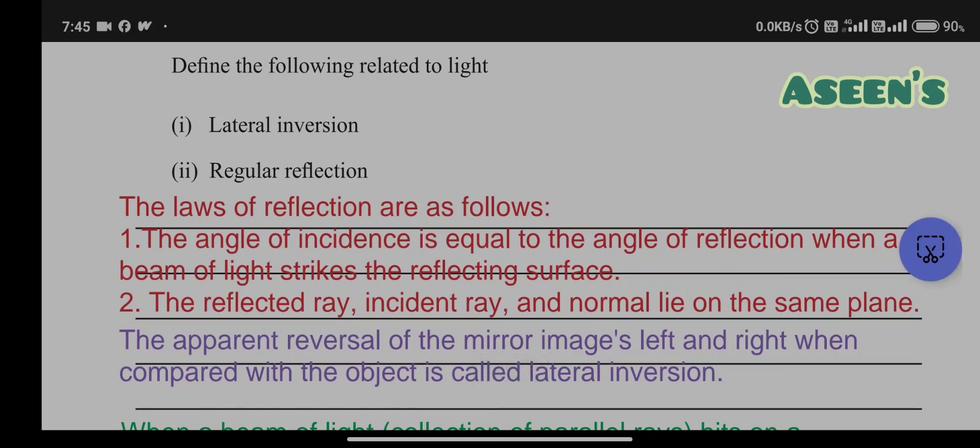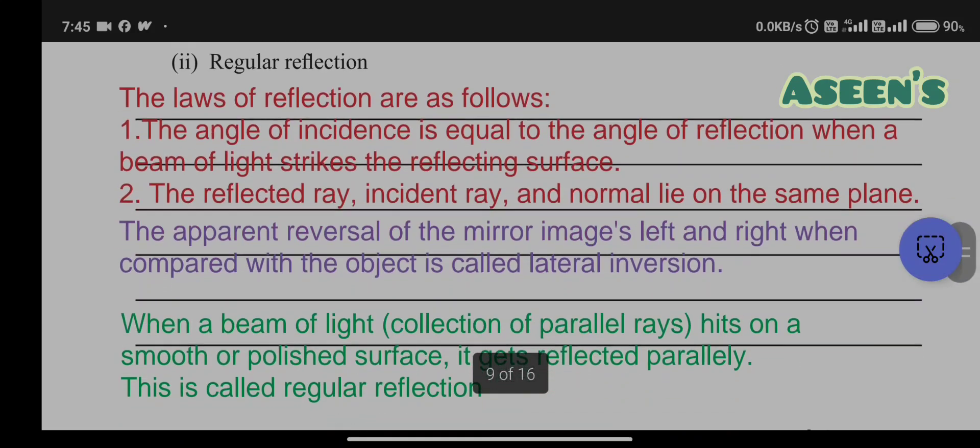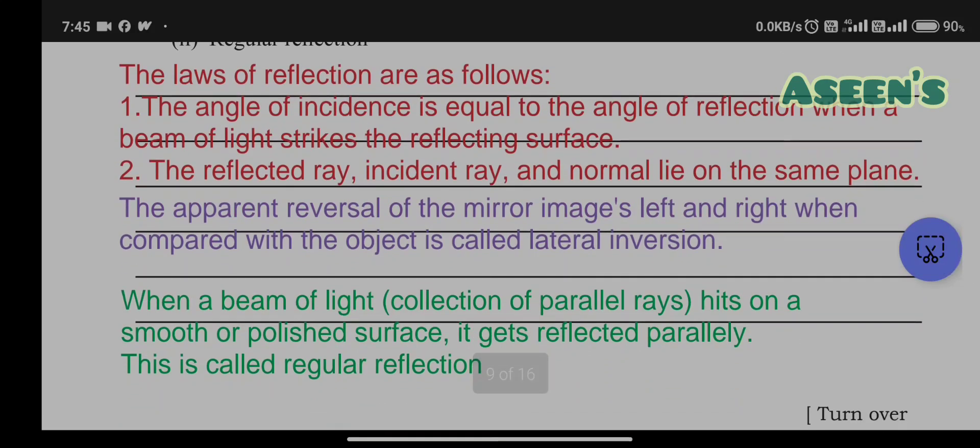Lateral inversion is the apparent reversal of mirror images. Whatever your left side is in the mirror will appear as your right side, and your right side will appear as left side. This could be of any object. Regular reflection: when a beam of light that is collection of parallel rays hits on a smooth or polished surface, it gets reflected parallelly. This is called regular reflection.